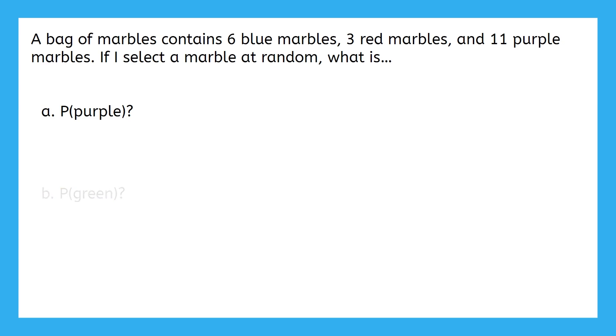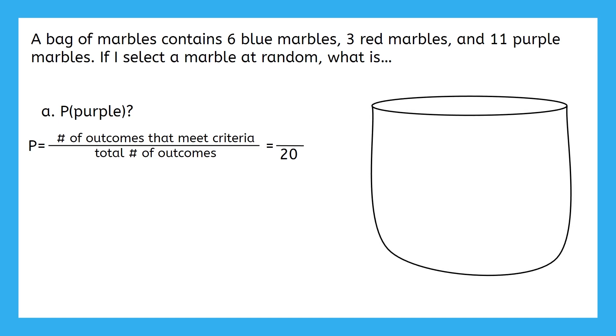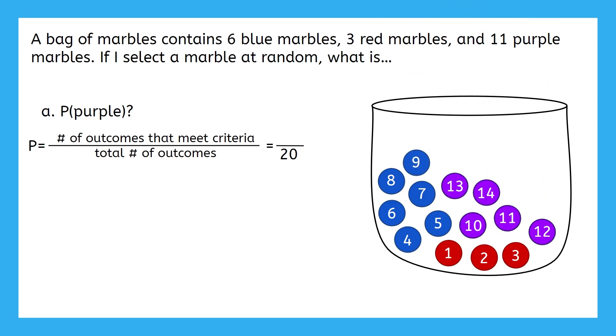Let's start with part A, P of purple, or the probability that the marble is purple. If we think about that simple probability formula, where we can abbreviate probability as capital P, we need to figure out what is the sample space for this scenario. How many total possible outcomes are there for pulling a marble out of this bag? Do not fall into the trap here of thinking that because there are three colors of marbles, that there are three outcomes. There are actually 20 possible outcomes. That's because if I reach my hand into this bag, I could pick out any one of these three red marbles, six blue marbles, or 11 purple marbles, which makes 20 total possible marbles that I can randomly select.